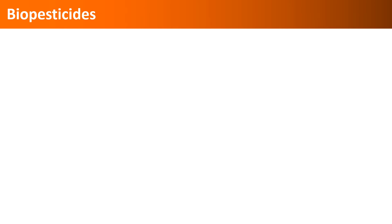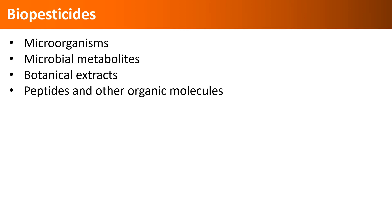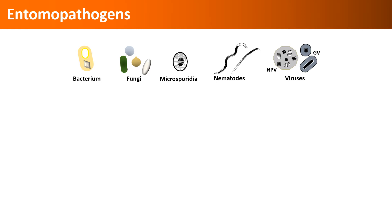We have several biopesticide products in the market for a variety of pests, and these are based on live microorganisms, microbial metabolites, or a combination of both, botanical extracts, and peptides and other organic molecules. If we look at entomopathogens, there are bacteria, fungi, microsporidia, nematodes, and baculoviruses that include nucleopolyhedroviruses and granuloviruses.